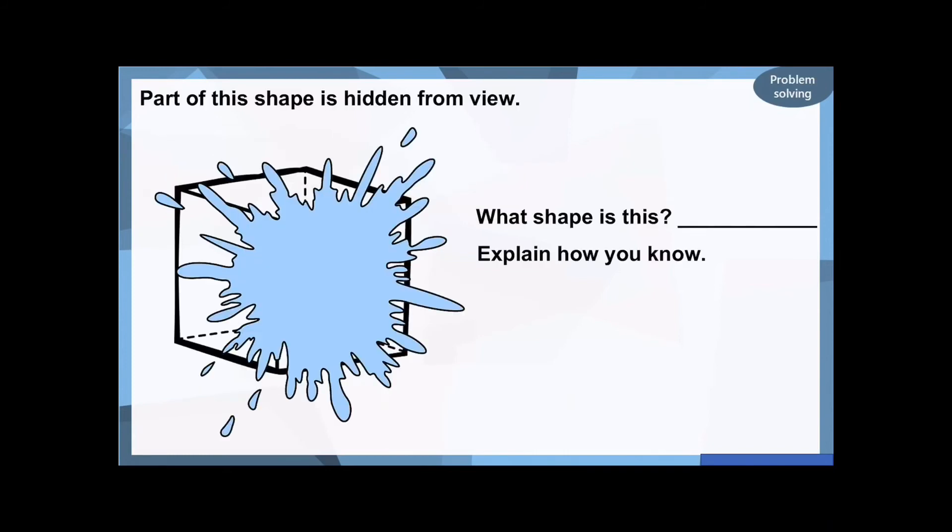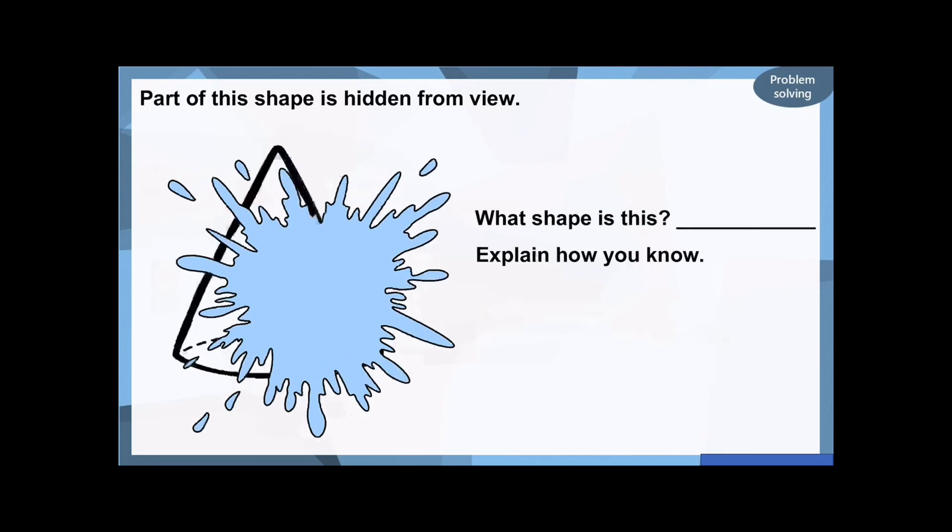Okay, I've got a problem solving question for you now. Part of this shape has been splattered. I've spilt my coffee like I normally do at school. What shape is this? And how do you know? Can you help me? Because part of it is hidden from view. Pause the video. Have a think about what shape you think it is and why. Okay, well done if you've said it is a cube. We know it's a cube because we can actually see some of the square faces. If it's got three square faces, which we can kind of see there, we know it's going to be a cube rather than a cuboid.